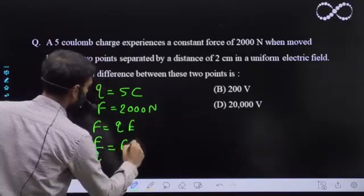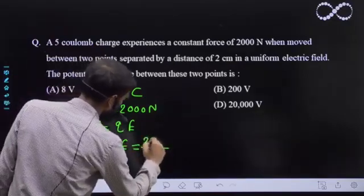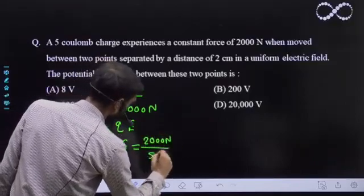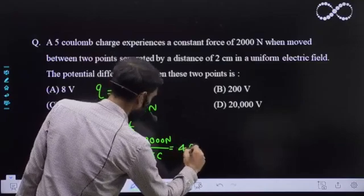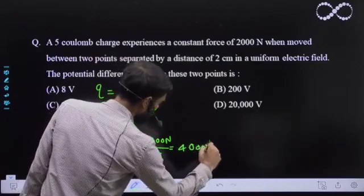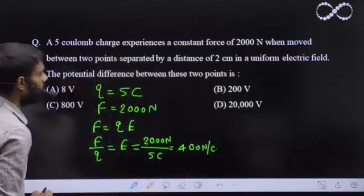Right, so this will become 2000 newton upon 5 coulomb. So that will become 400 newton per coulomb. So that is the electric field now, ok. Now...